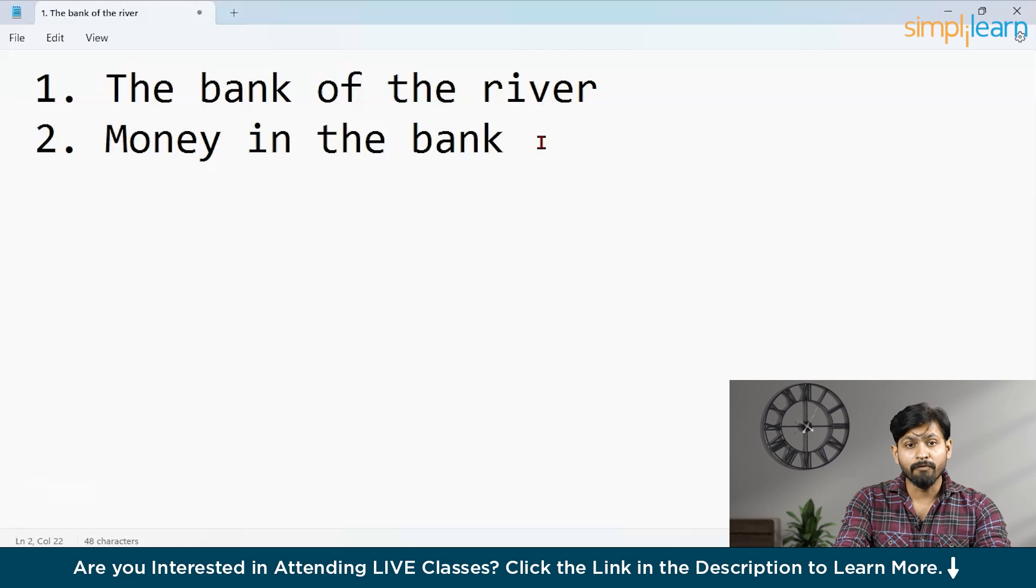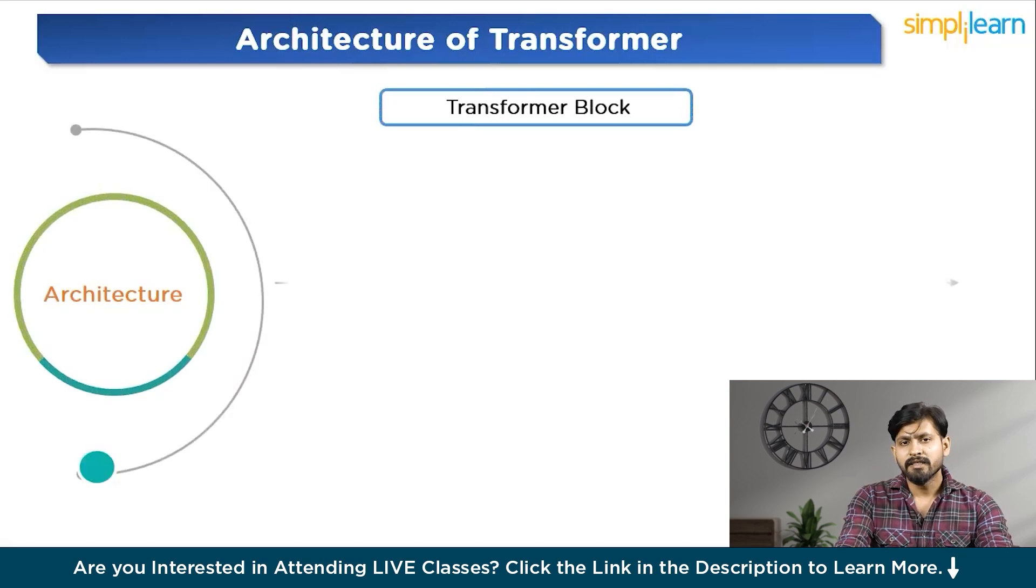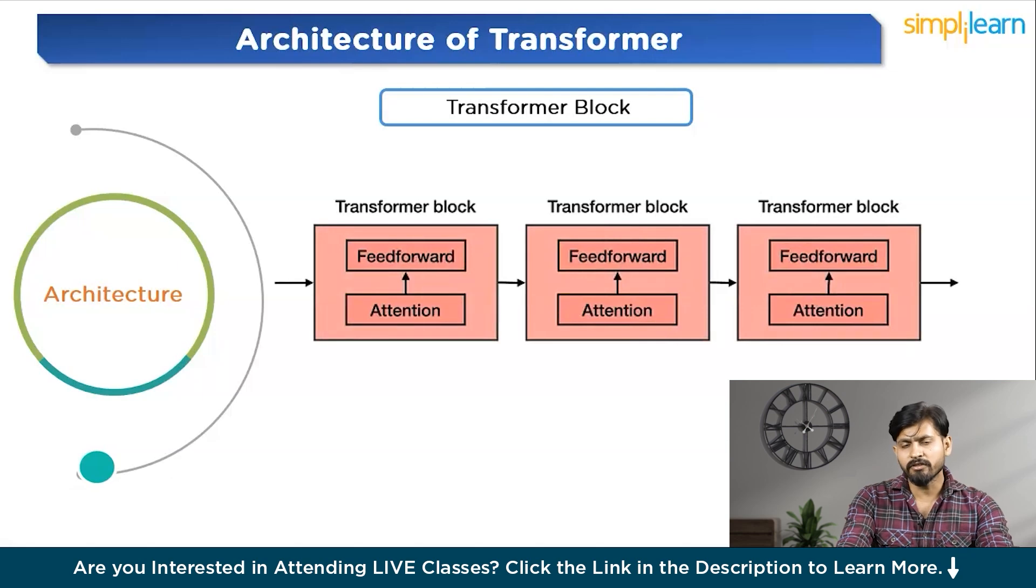However, transformer models utilize a more advanced form of attention known as multi-head attention. Here, multiple embeddings are employed to enhance vectors and provide richer context. Multi-head attention significantly boosts the effectiveness of language models in processing and generating text. In a transformer comprised of multiple layers of transformer blocks, each with an attention and feed-forward layer, it functions as a large neural network predicting the subsequent word in the sentence. A transformer generates a score for all the words with higher scores indicating greater likelihood of being the next word.